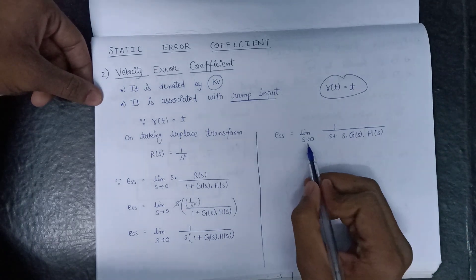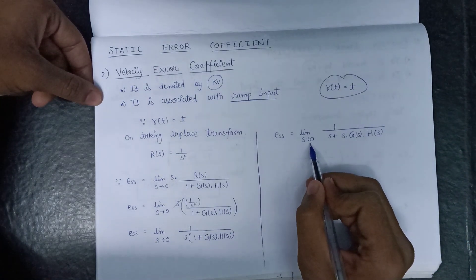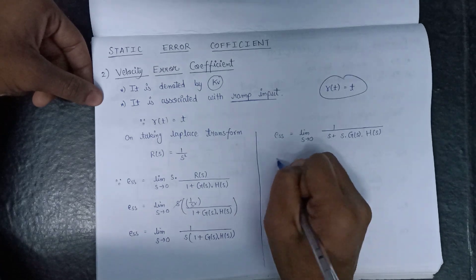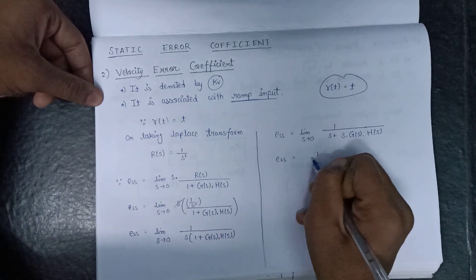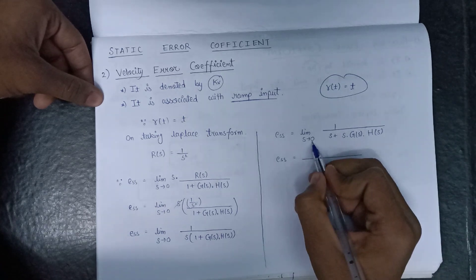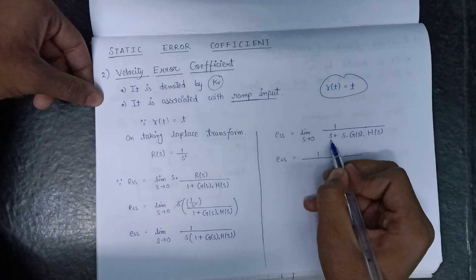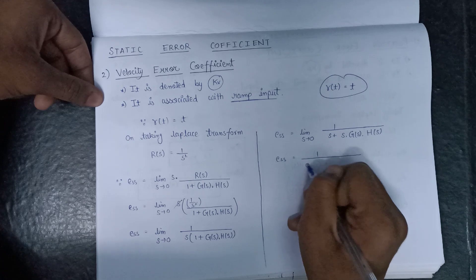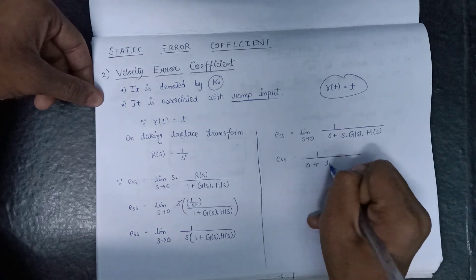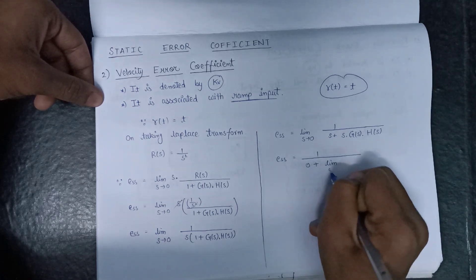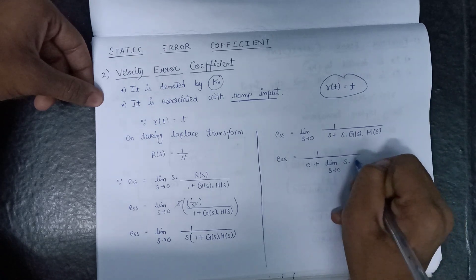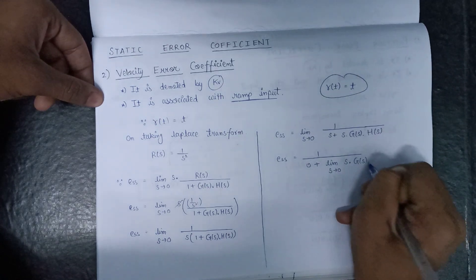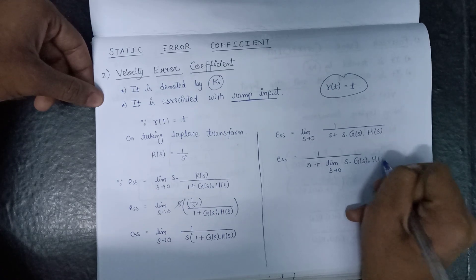After this, on putting s equals to 0, we get E(s) is equal to 1, here s tends to 0, that's where this term will become 0 only, plus limit s tends to 0, s into G(s) into H(s).